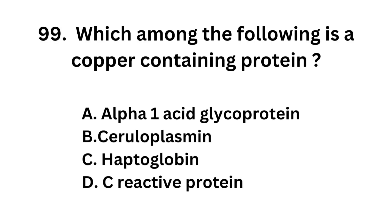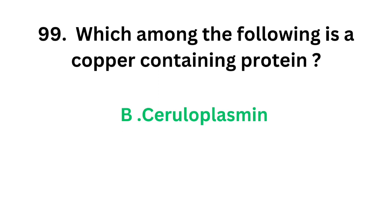Question number 99. Which among the following is a copper-containing protein? Option A. Alpha-1 acid glycoprotein, option B. Ceruloplasmin, option C. Haptoglobin, option D. C-reactive protein. The correct answer is option B, ceruloplasmin. Ceruloplasmin is a copper-containing protein.